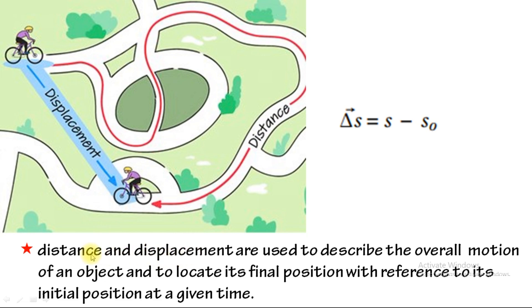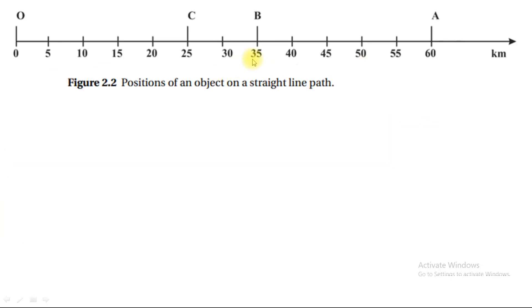We can see distance and displacement in the final position with reference to the frame. Moving from the origin to the final position, the initial position is S-initial and the final position represents the displacement. The shortest path is assumed to be the displacement.